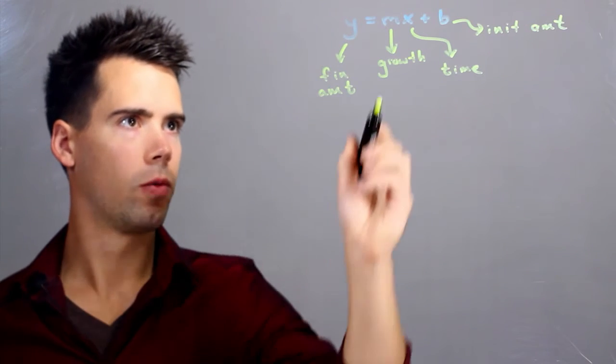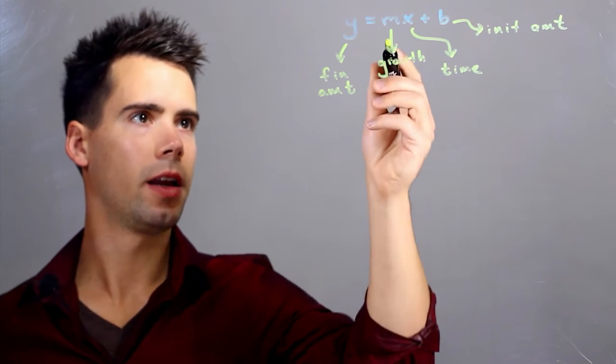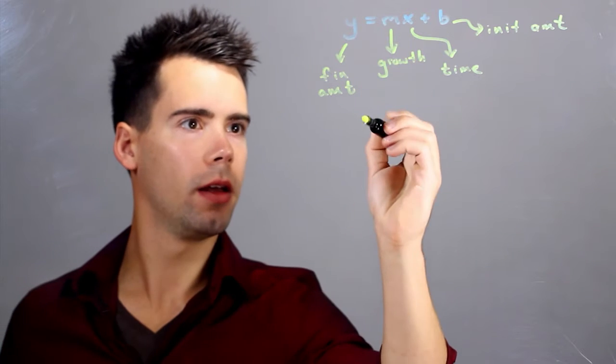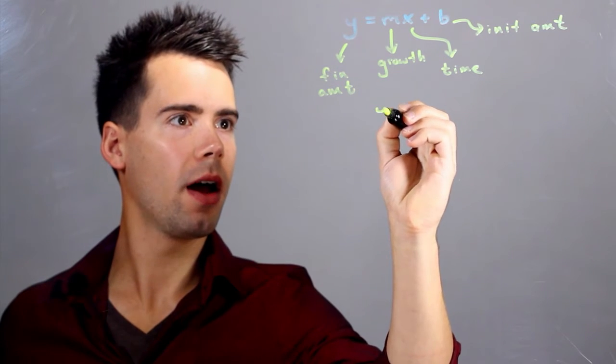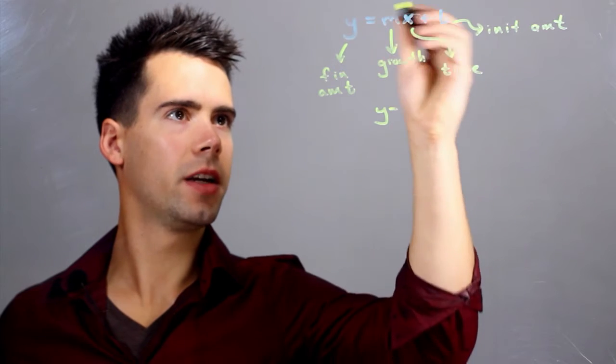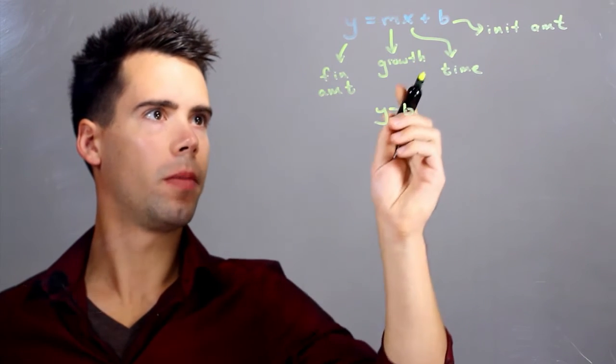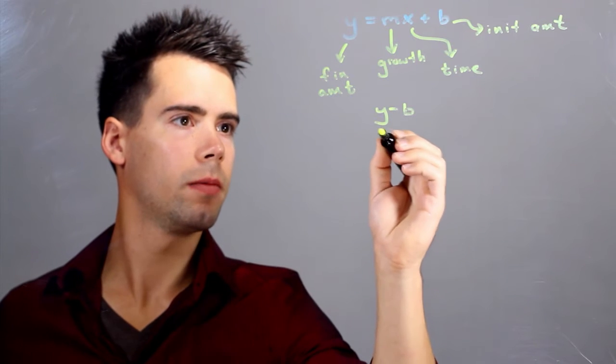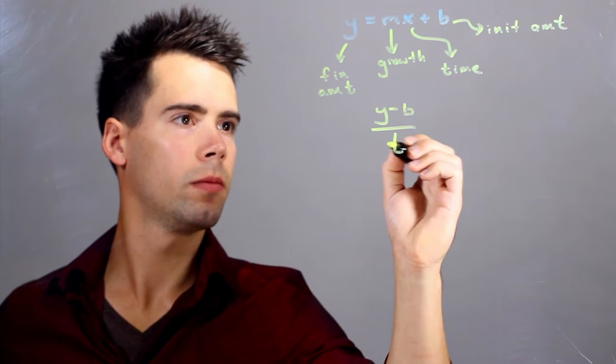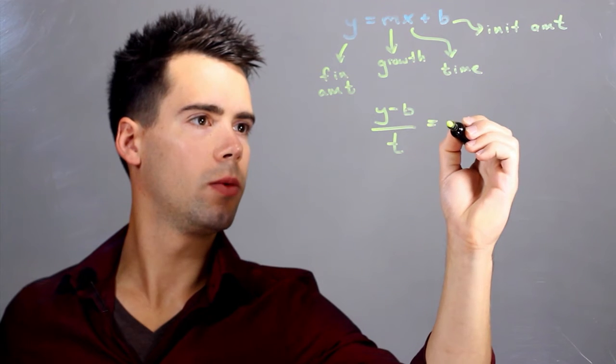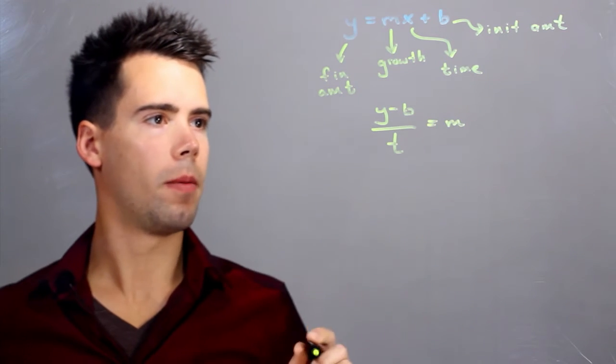So if we want to solve for growth we can say simply isolate m. We can do this by finding that y minus b divided by x or t in our case is equal to m.